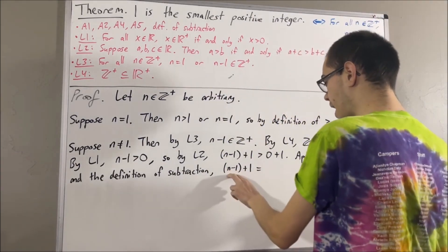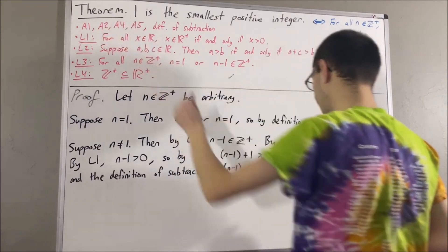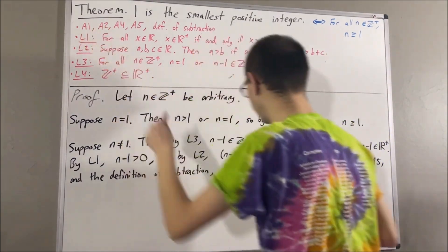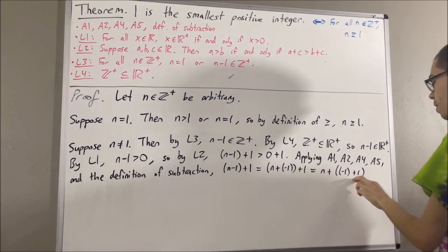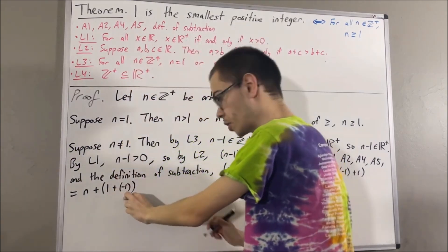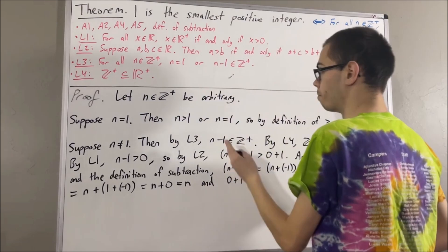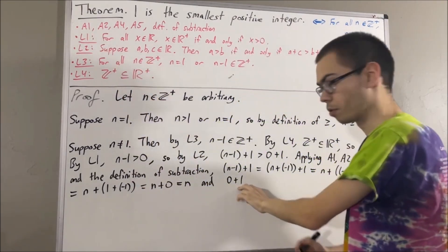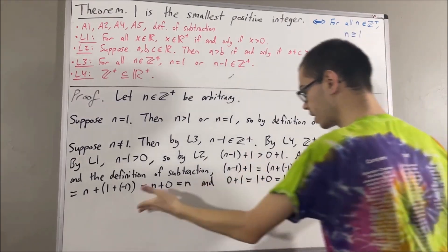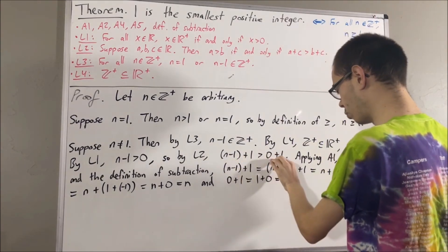By definition of subtraction, n minus one equals n plus the negative of one. By the associative law (axiom 2), we can move the parentheses around negative one plus one. By axiom 1, the commutative law, we replace negative one plus one with one plus negative one. By axiom 5, one plus negative one equals zero. By axiom 4, n plus zero equals n. Then by axiom 1, zero plus one equals one plus zero, and by axiom 4, one plus zero equals one. So the left-hand side simplifies to n and the right-hand side simplifies to one.